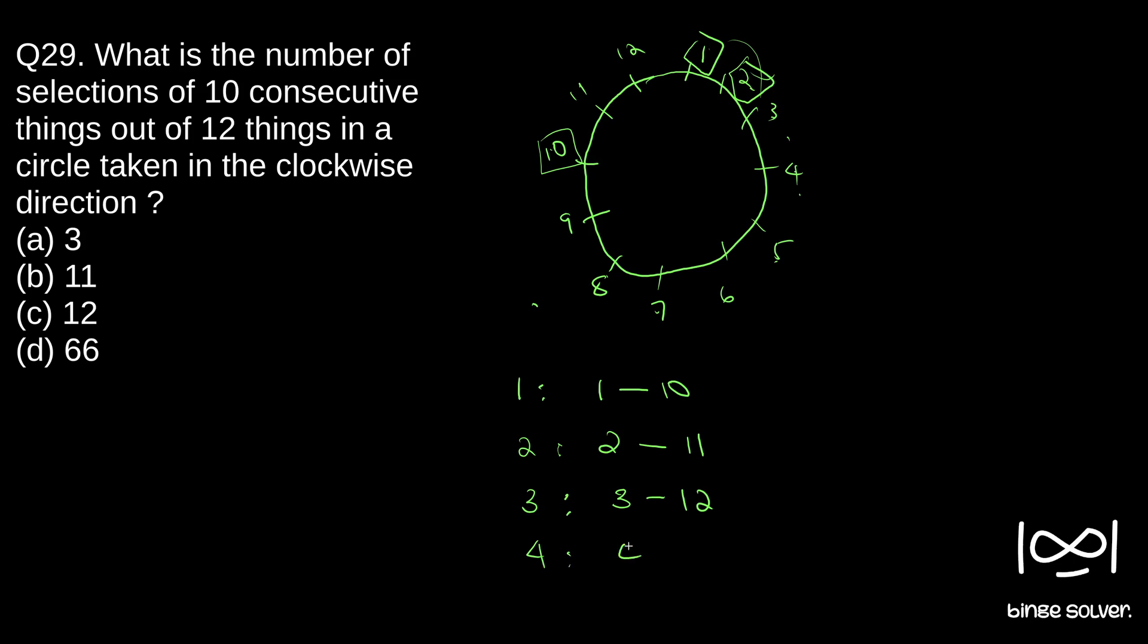And fourth case will be 4 to 1. So if we begin with 4 and if we select the 10 consecutive people, we'll get 1, 2, 3, 4, 5, 6, 7, 8, 9, 10.